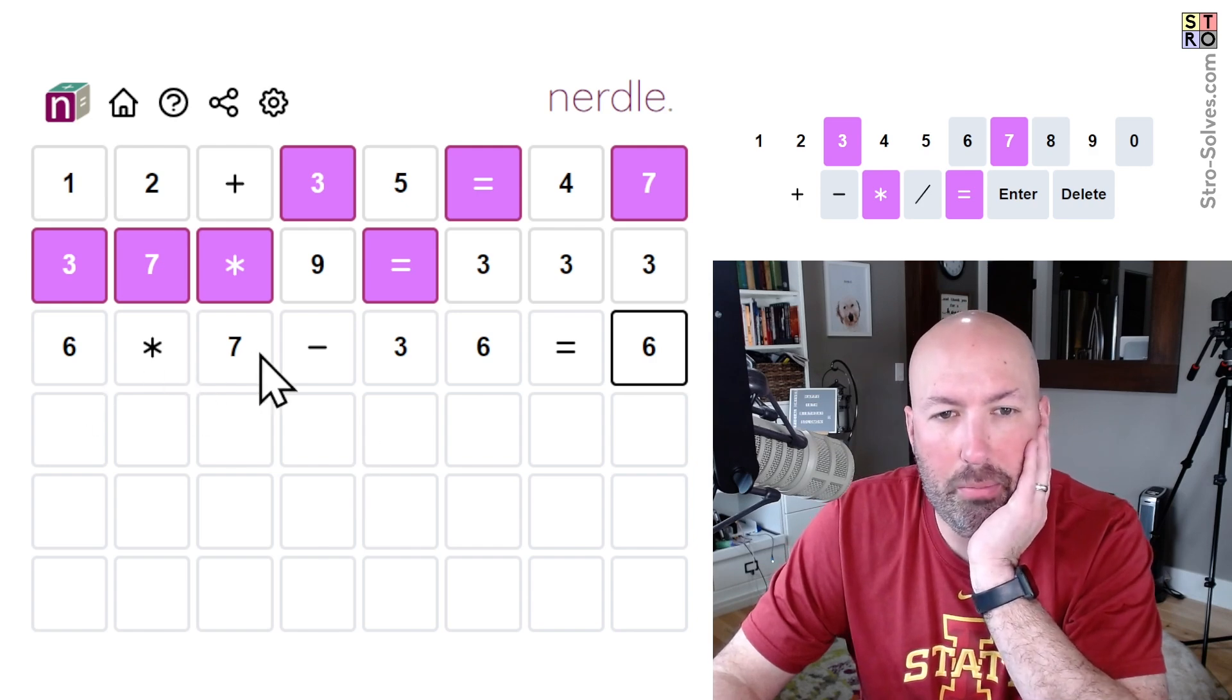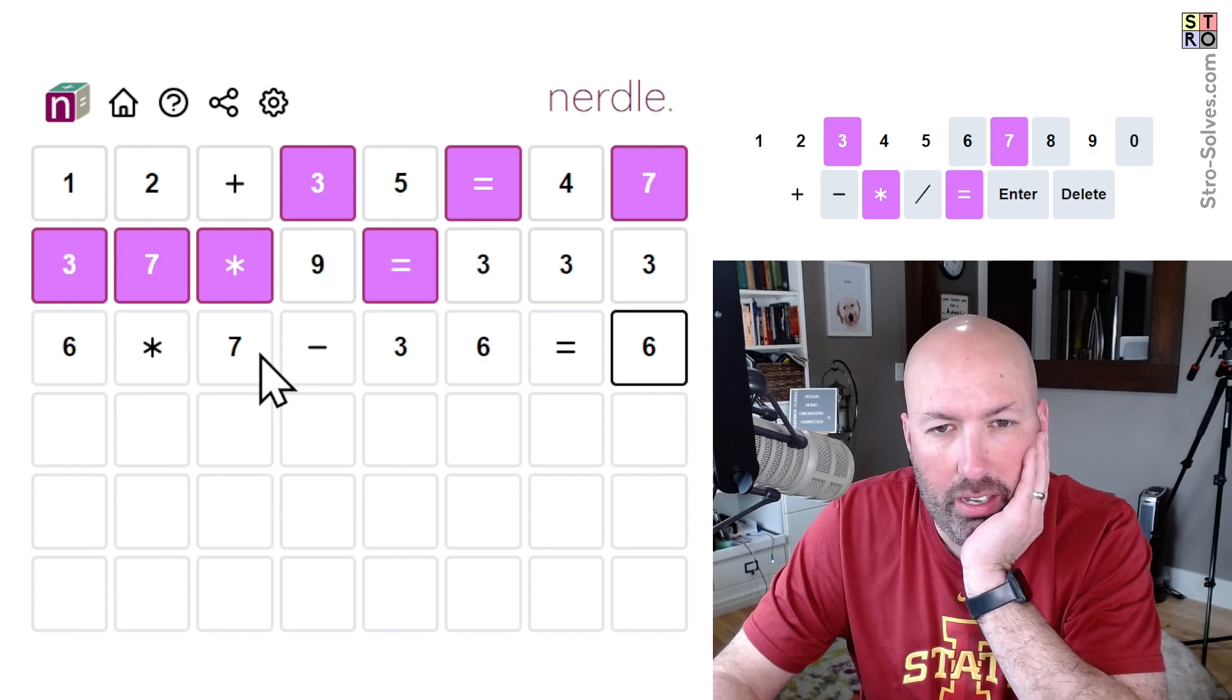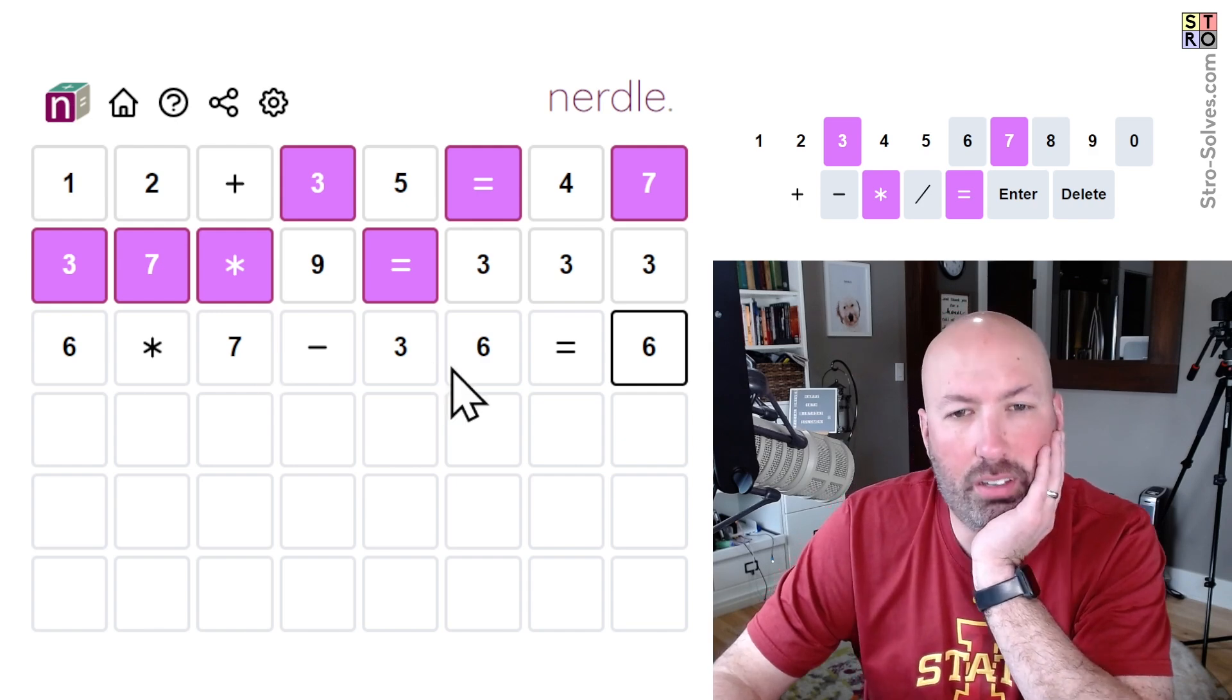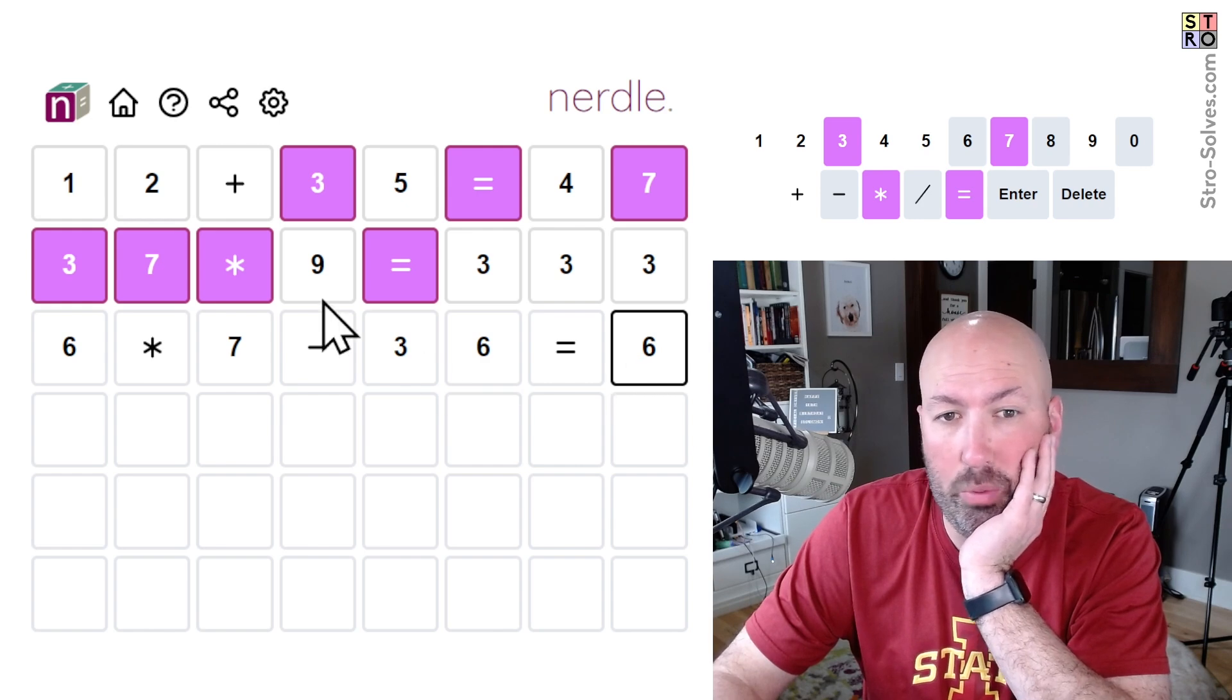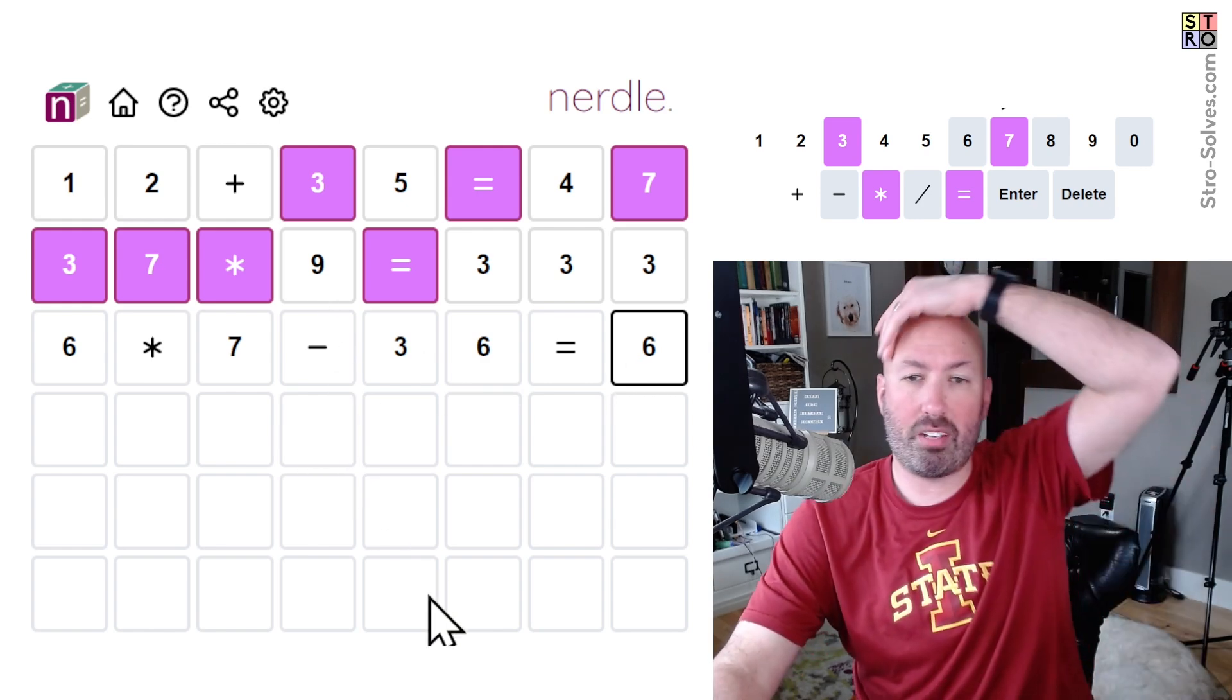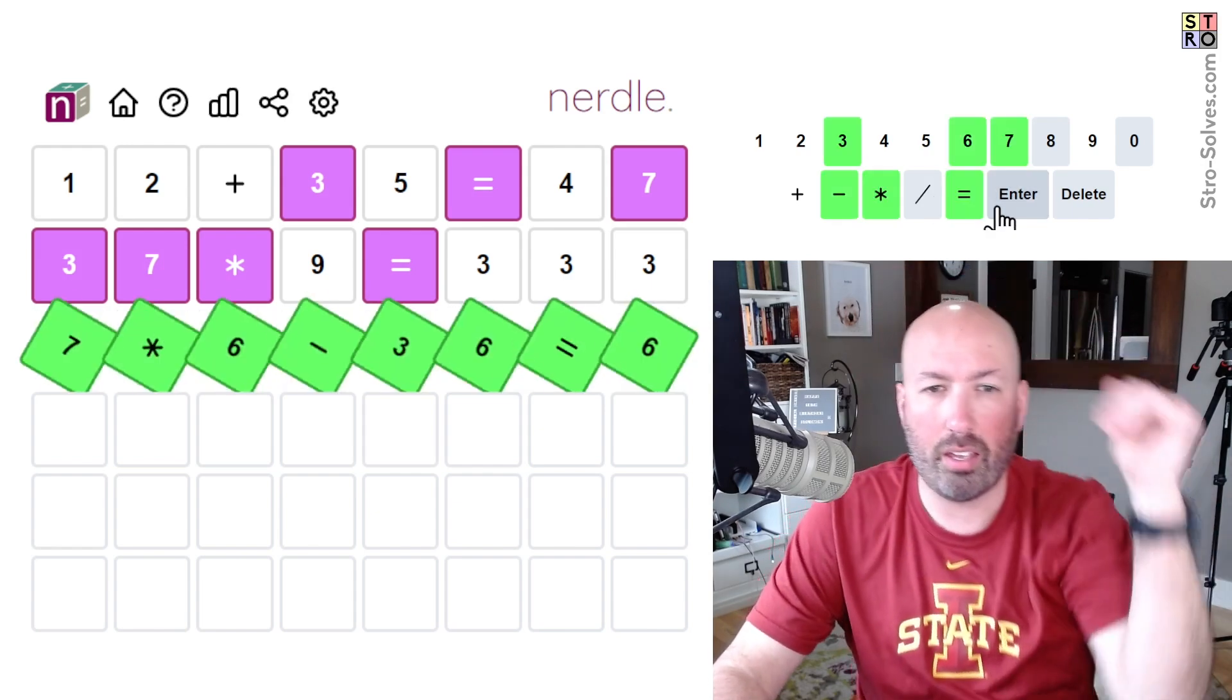Because if we do six times eight we're at 48, and now we've got to subtract at least nine in order to get just down to into the 30s and we can't use nine. So yes, six times seven minus 36. I think that works. Let's go with that. Is that the answer?